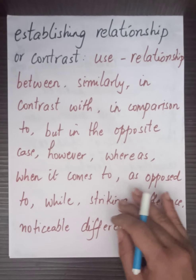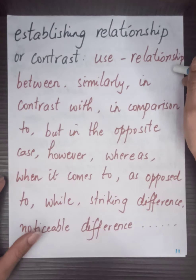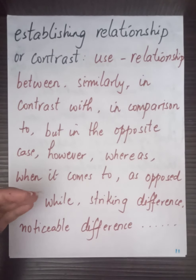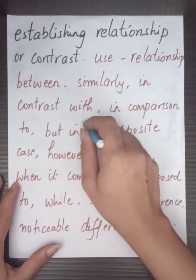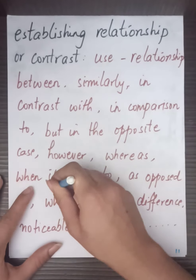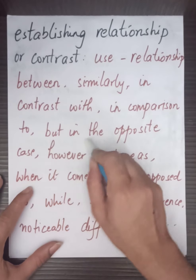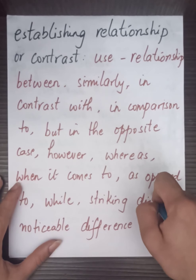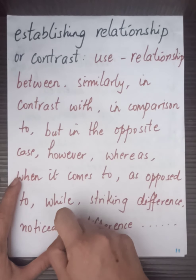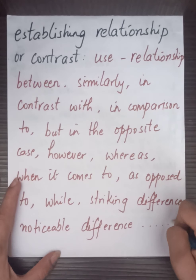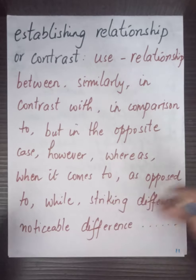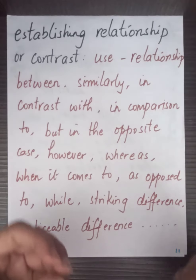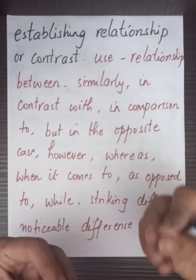To establish relationship or contrast, use phrases such as: 'Relationship between,' 'Similarly, in the year 1950 this was seen,' 'In contrast with,' 'In comparison to,' 'However,' 'Whereas,' 'As opposed to,' 'While,' 'Striking differences are being witnessed,' 'Noticeable difference is being witnessed between, for example, the usage of internet by the youth and the adults.' These words help you raise comparisons and establish contrast.